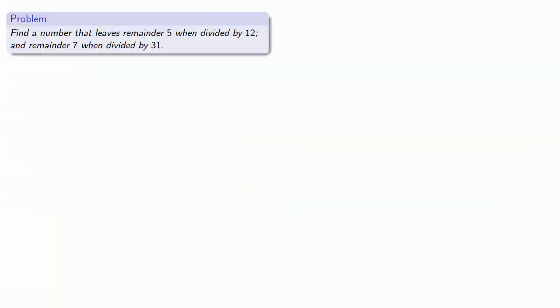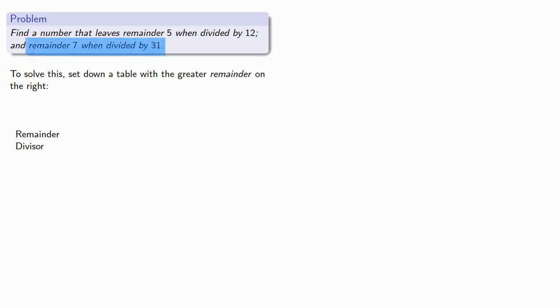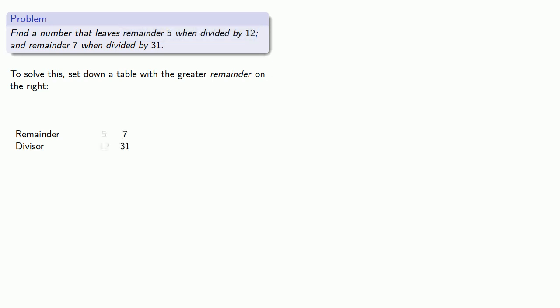So Brahmagupta considers the following problem: find a number that leaves remainder 5 when divided by 12, and remainder 7 when divided by 31. To solve this, we'll set up a table with the greater remainder on the right. We have a greater remainder of 7 when our divisor is 31, and the other remainder, 5, when our divisor is 12. So we'll put remainder 7 divided by 31 on the right, and remainder 5 divided by 12 on the left.